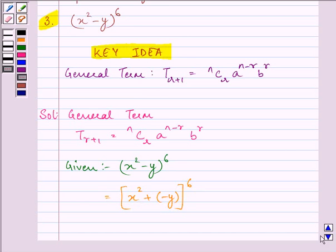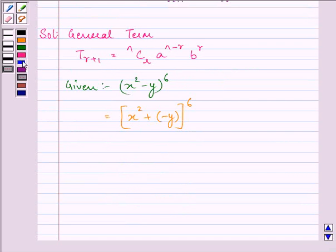Now here on comparing it with the general term that we explained in the key idea, a is equal to x squared, b is equal to negative y, and n is equal to 6. On substituting the values of a, b, n